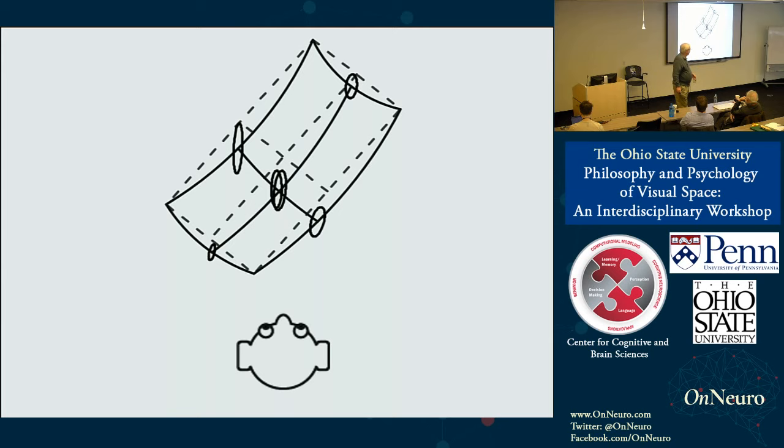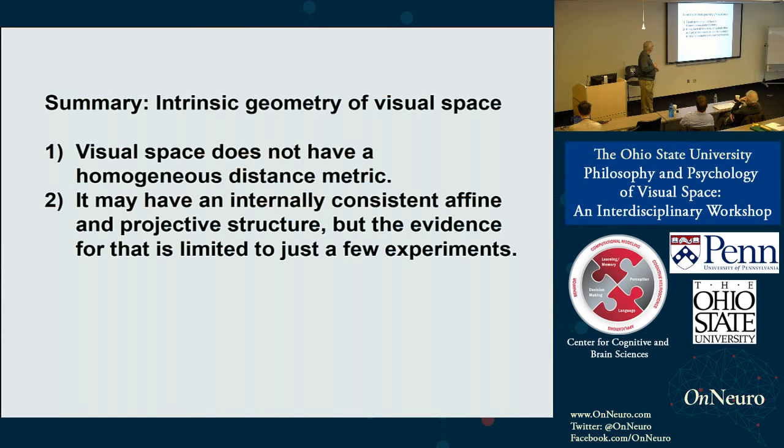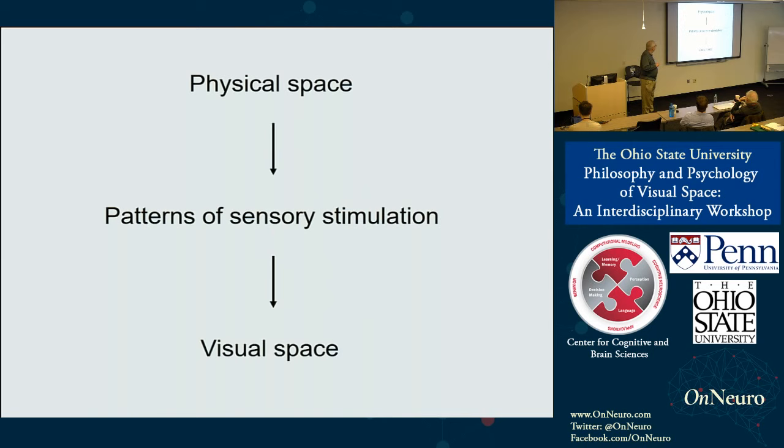We also did another experiment testing Pappus of Alexandria's theorem, done in Utrecht. The results came out similarly, suggesting we do have an intrinsic projective structure. I want to be cautious drawing strong conclusions — we're talking about only two experiments — but it's at least an intriguing start. To summarize: visual space does not have a homogeneous distance metric, but it may have an internally consistent affine or projective structure.